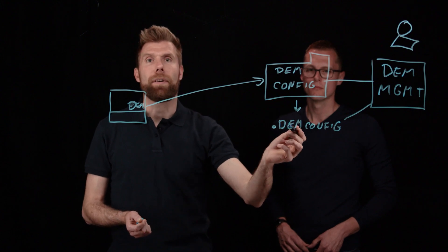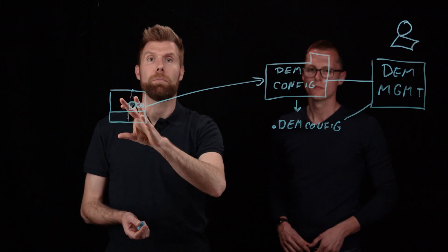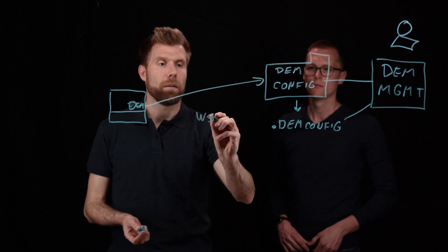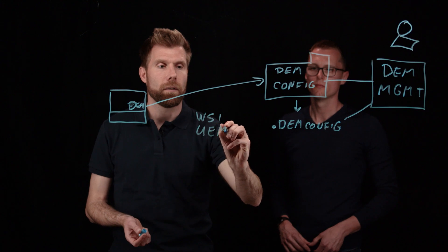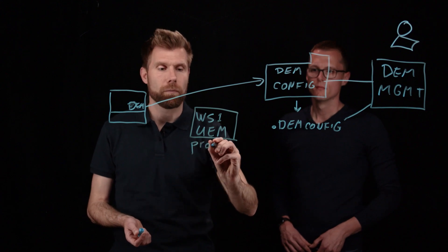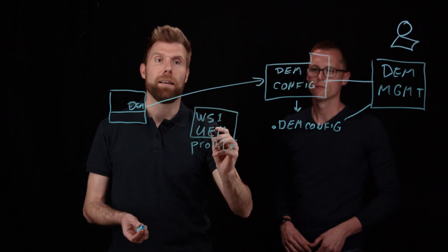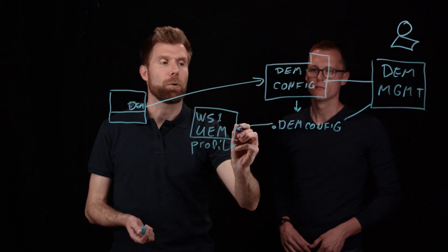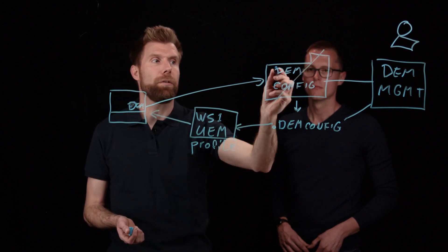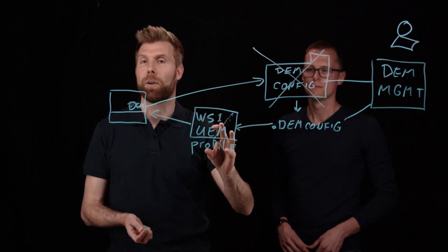Now, the good thing is the DEM management console has a new feature called integration mode. So with the DEM management console, you can now create this DEM config file. Now, how to get that DEM config file to the endpoint is we're going to leverage Workspace ONE UEM. So we're going to assume this is a modern managed PC managed by Workspace ONE UEM. And within the Workspace ONE UEM console, we can now create a profile. And within this profile, we can actually define this, we can upload this DEM config file, and then the profile gets delivered to the endpoint. So instead of having a central config share, you can get rid of that requirement and deliver the same content using a Workspace ONE UEM profile.